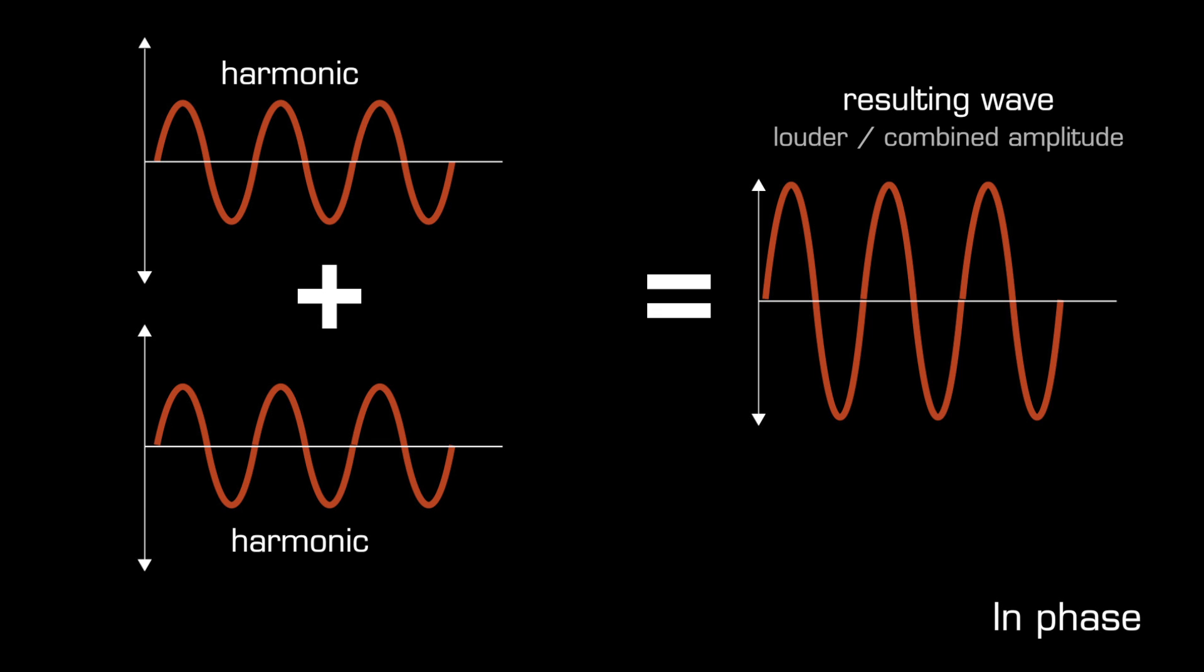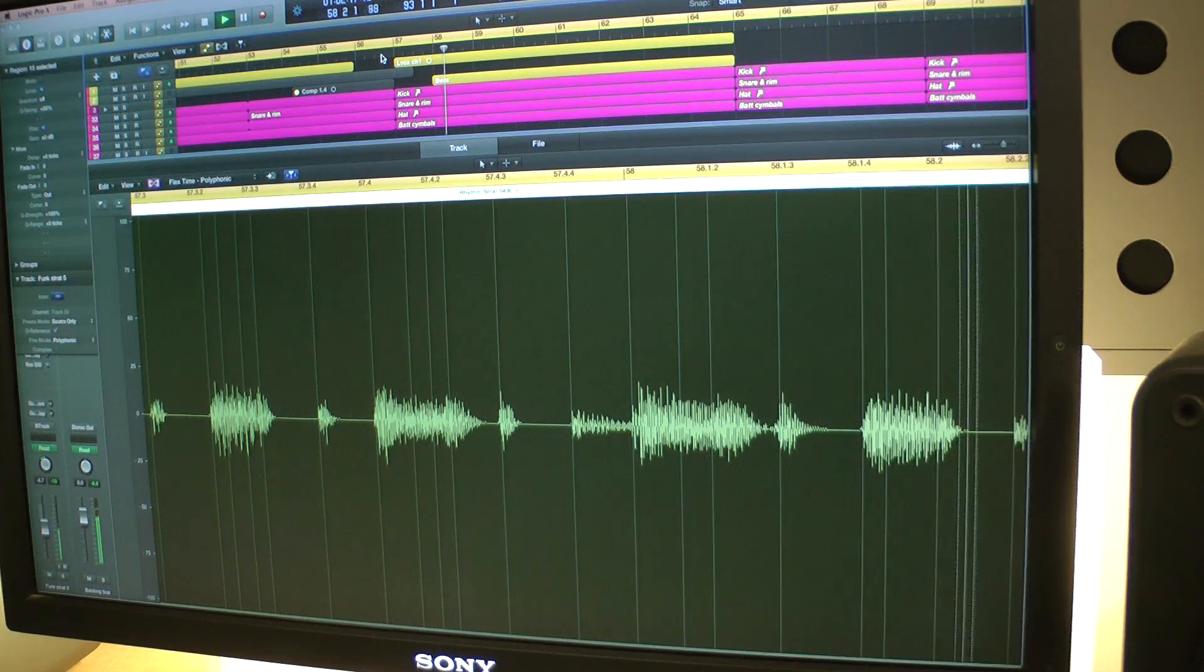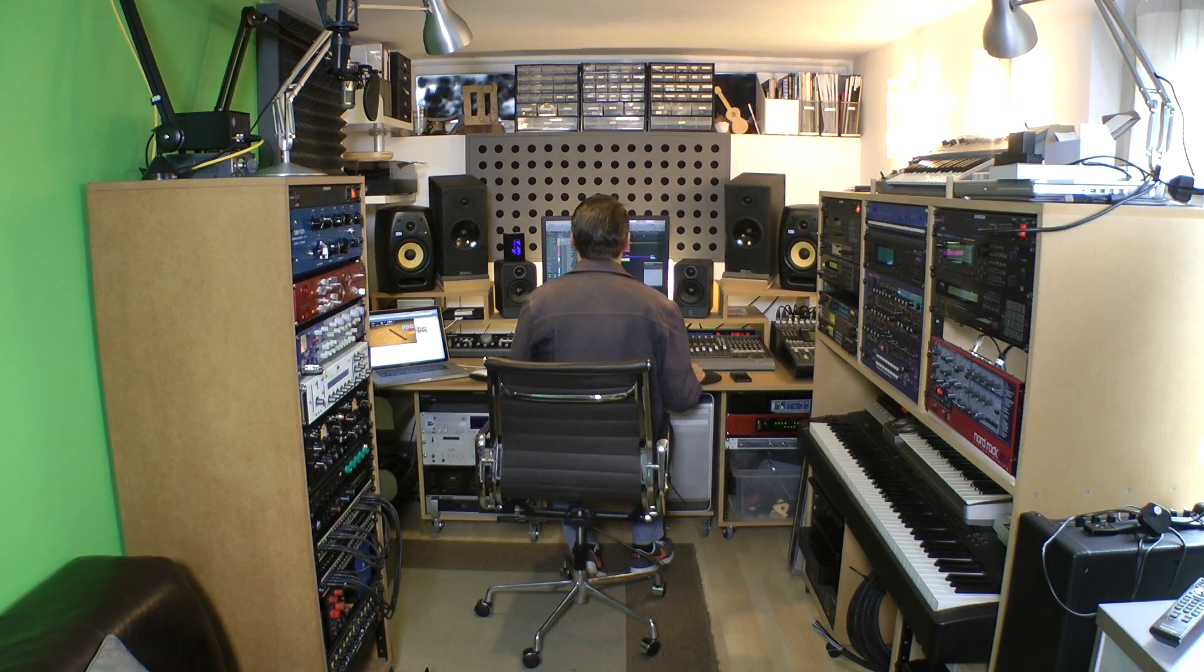When two identical sound wave signals meet, they produce a wave that is the sum of their amplitudes, stronger and louder. This is true for air pressure sound waves, and electrical and digital sound waves in an electronic audio system such as a studio.